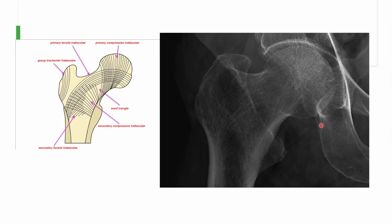If we look at complex areas like the proximal femur, which has a dense trabecular arrangement, the loading is also different there. On the medial side it is in compression, and on the lateral side it is in tension.